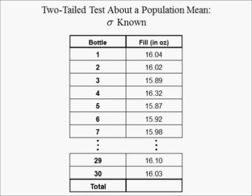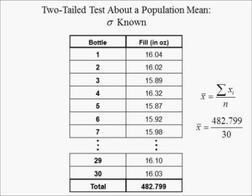If there was enough room on this slide, this table would list the volumes of the 30 bottles randomly picked from the production line. Instead, it lists the volumes of the first seven and the last two bottles of the 30-bottle sample. The sum of the volumes in the 30-bottle sample equals 482.799 ounces. The sample mean is computed by summing the values of x — the ounces of Coca-Cola in each bottle — and dividing by the sample size. Since the sum equals 482.799 ounces and the sample size is 30, the sample mean is equal to 16.0933 ounces.